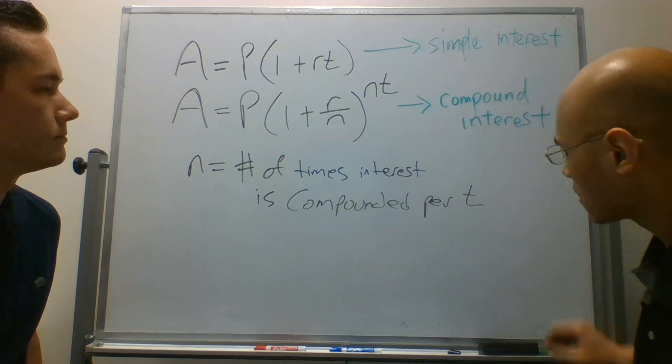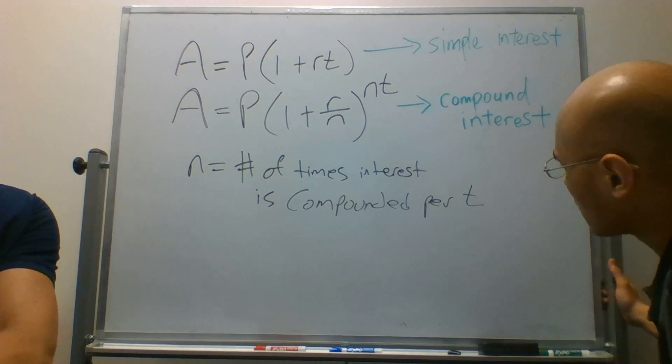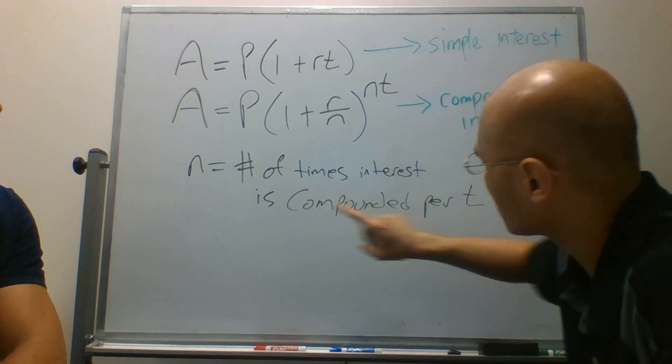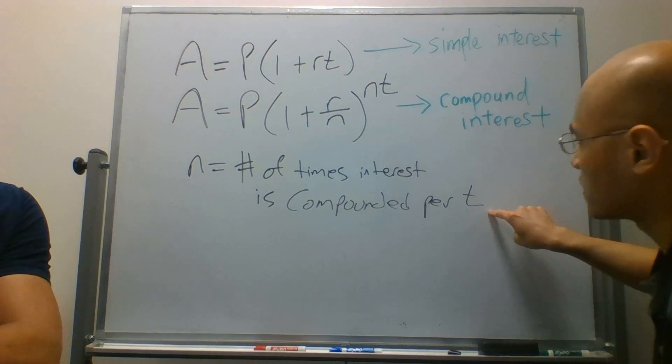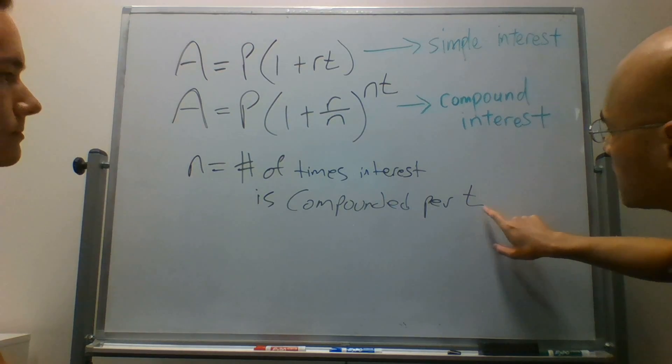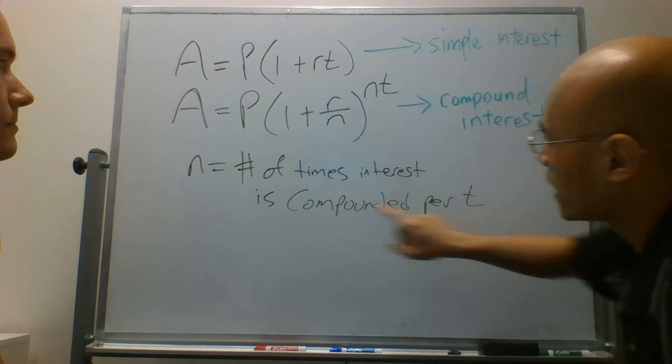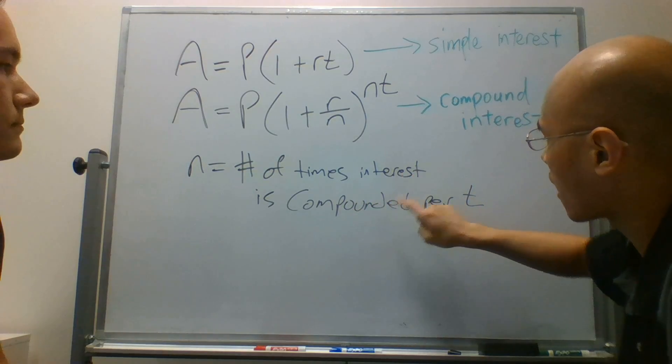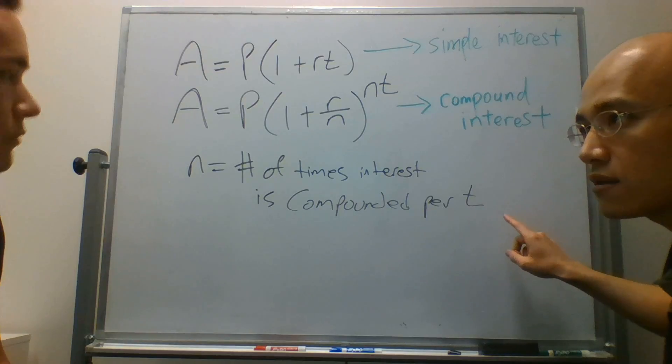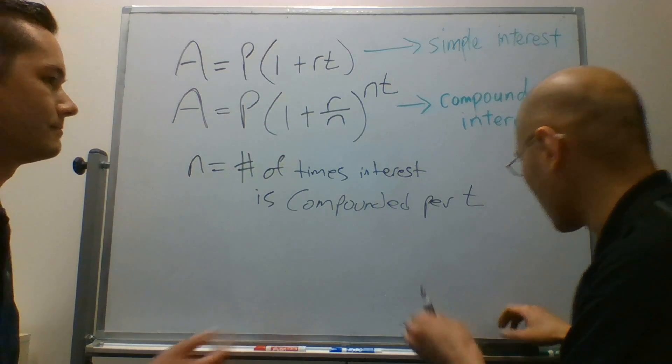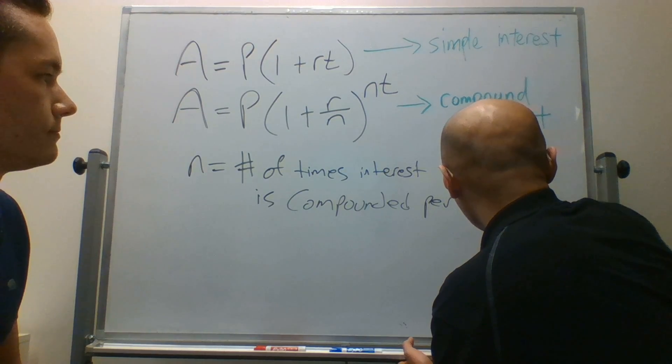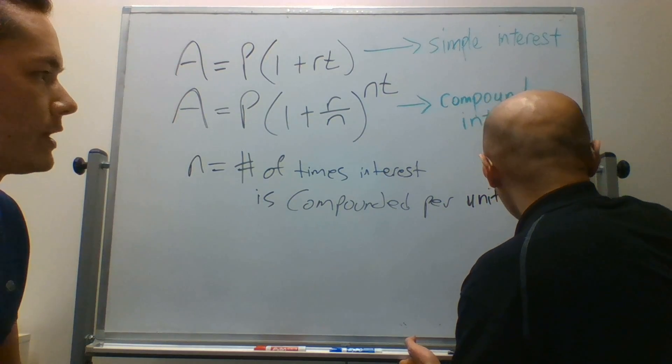I think it might be helpful to clarify that n here is per unit of t. So let's say if t is 40 years, n is the number of times that the interest is compounded per year of t. So we'll just clarify this: per unit of t.